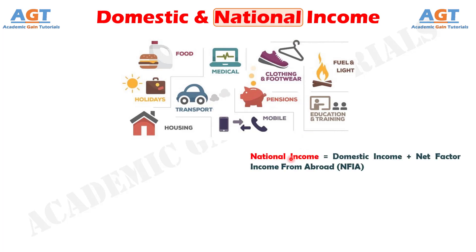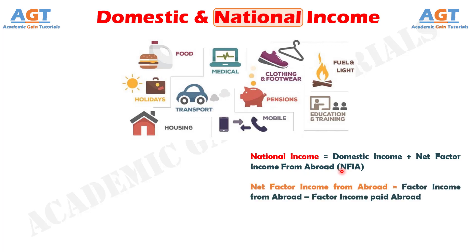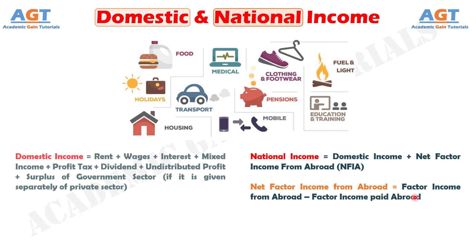The formula of national income can be written as: National Income equals Domestic Income plus Net Factor Income from Abroad, where Net Factor Income from Abroad equals Factor Income from Abroad minus Factor Income Paid Abroad.